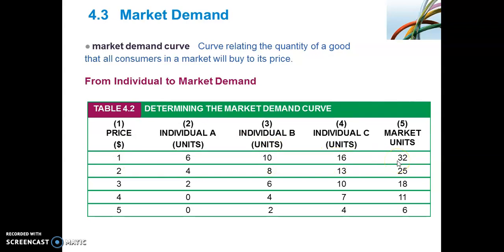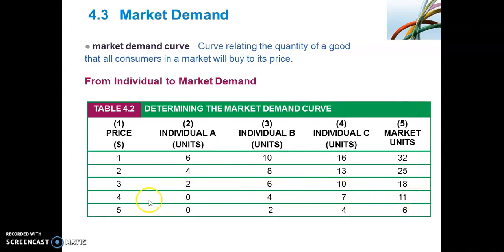So the market demand at the price of $1 is 32 units. When the price is $4 for coffee, the market demand is 11 units. Individual A demands 0 units at $4; however, Individual B will demand 4 units and Individual C, 7 units. That gives us a cumulative total of 11 units being the market demand at a price of $4. You can do that for the other prices as well.